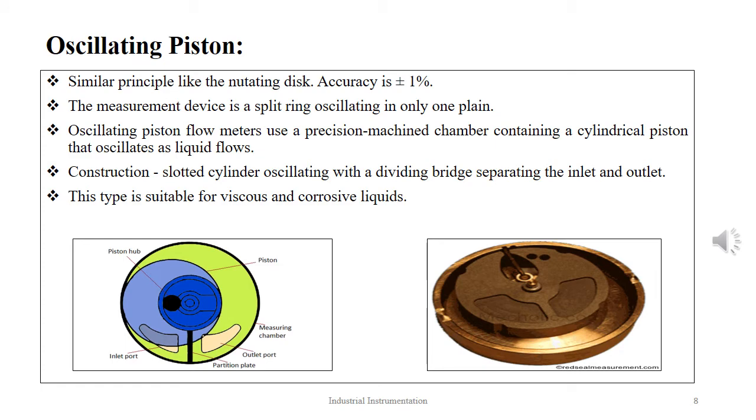The second type of positive displacement flow meter is the oscillating piston. The oscillating piston flow meter uses a precision-machined chamber containing a cylindrical piston that oscillates as liquid flows. The piston's central shaft is constrained to run in a circular groove in the chamber, resulting in an off-center rotating motion as the liquid sequentially enters and exits compartments machined into the underside of the piston.